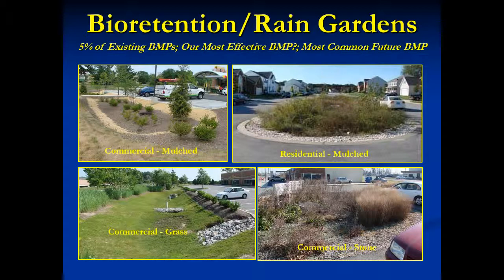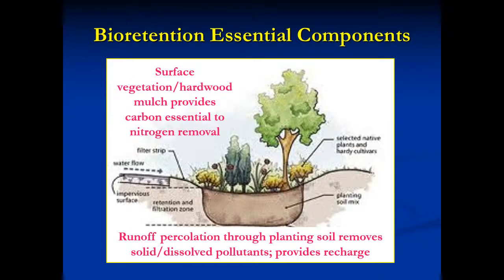Bioretention will be the most common BMP in the future. Most consist of a pit three to five feet deep. The bottom may have a gravel layer, though most of the pit is filled with a mixture of sand and organic matter resembling planting soil. The surface has a two to three inch layer of wood mulch, and the mulch surface is depressed a foot below the point where runoff could exit first. The two most critical bioretention components are the surface layer of mulch or vegetation, along with the highly permeable planting soil, which allows runoff to percolate through the underlying soil where recharge occurs.